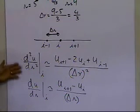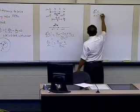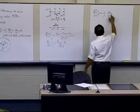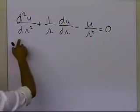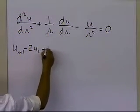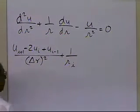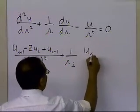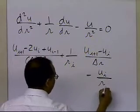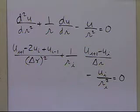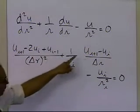So I'm going to substitute these approximations into my differential equation. The equation is: d²u/dr² plus 1/r times du/dr minus u/r² equals 0. Substituting, the second derivative becomes u sub i plus 1, minus 2u sub i, plus u sub i minus 1, divided by delta r squared. Plus 1 divided by r at node i, times u sub i plus 1 minus u sub i divided by delta r. Minus the value of u at node i divided by the value of r at node i. So we have approximated the differential equation in terms of these radial displacements at specific points.